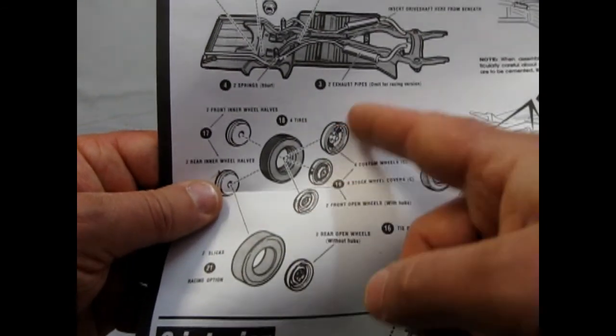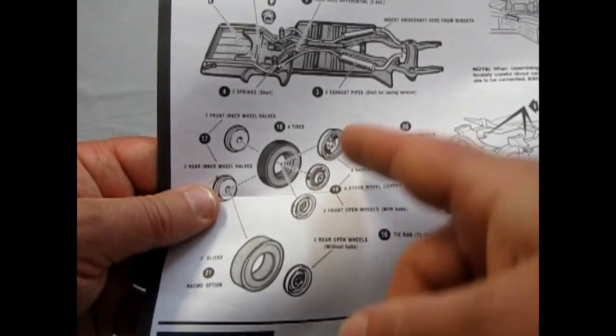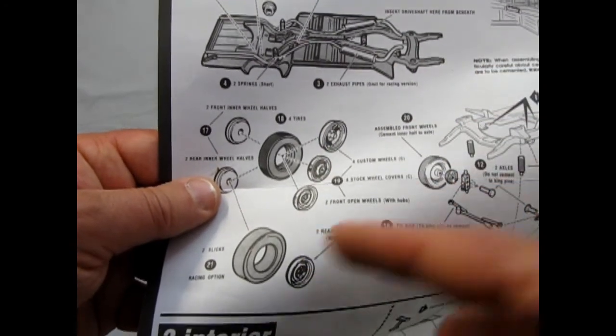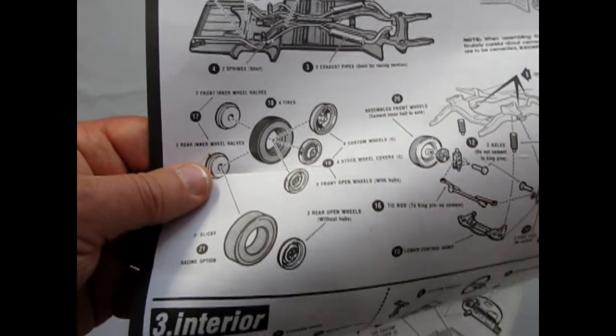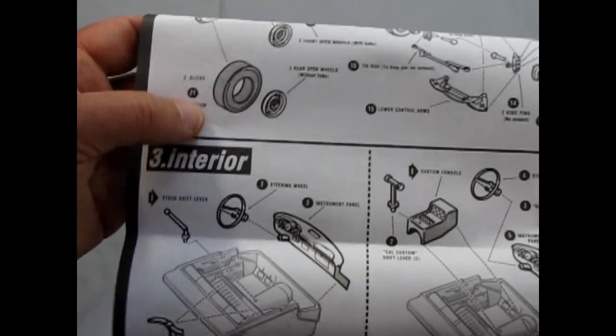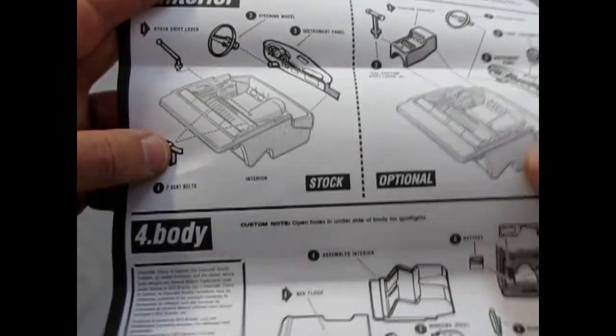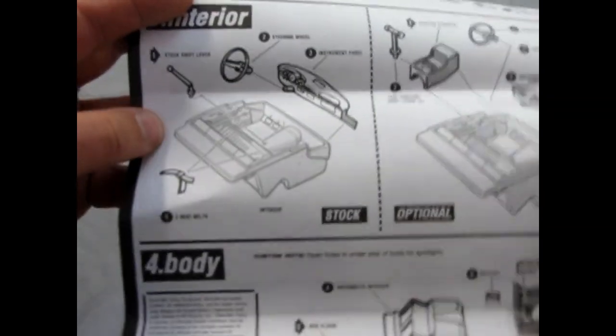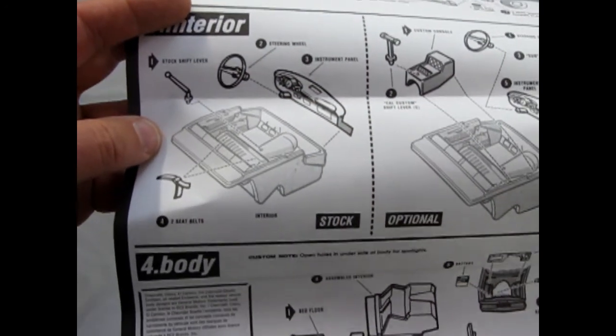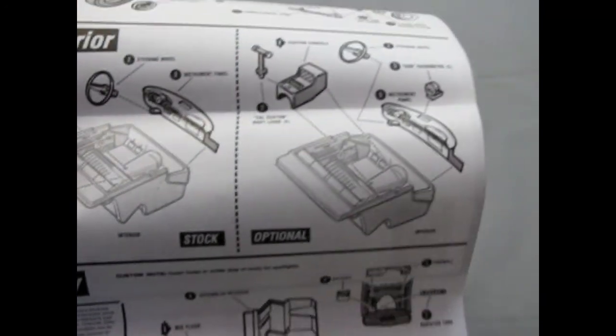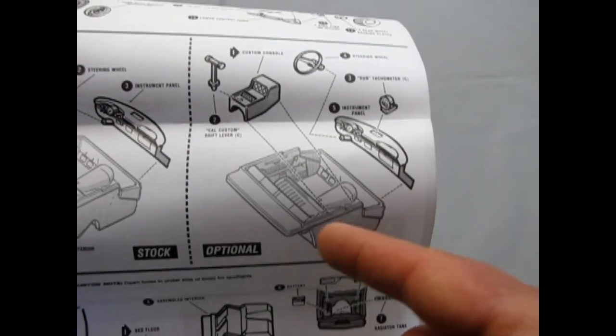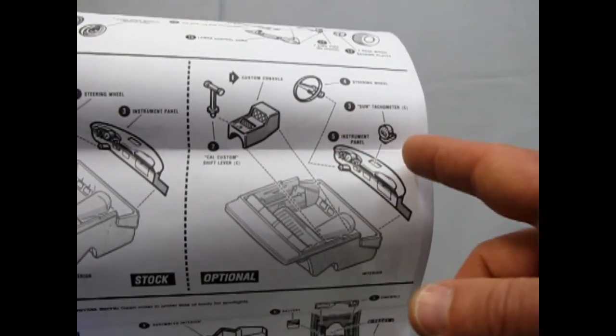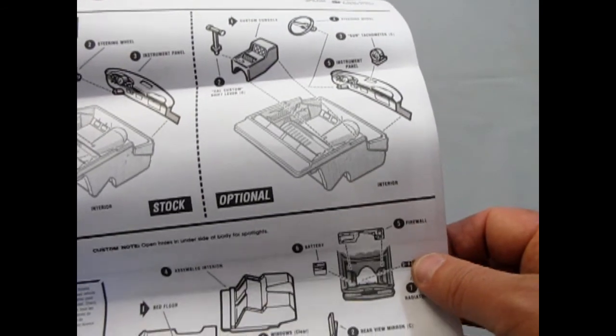You actually get three separate wheels. Custom wheels, the stock hubcap, and of course open rim wheels. And you get the big drag slicks in the back. Now the interior is a one piece with a simple dashboard and such. But don't let that stop you from enjoying this kit. You also get these custom bits and a sun tachometer for your drag racing stuff.